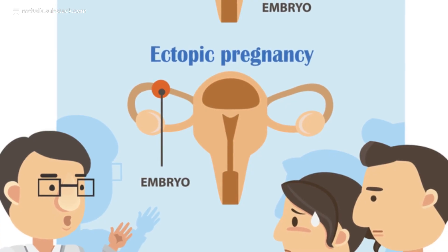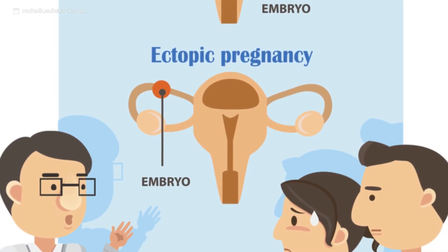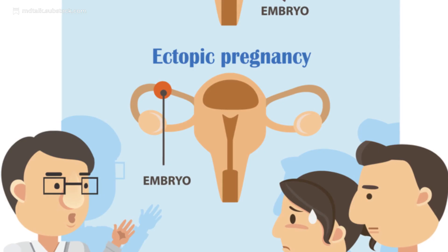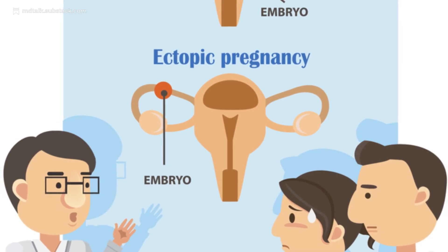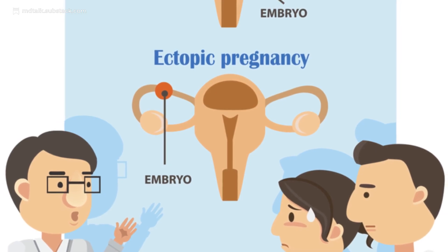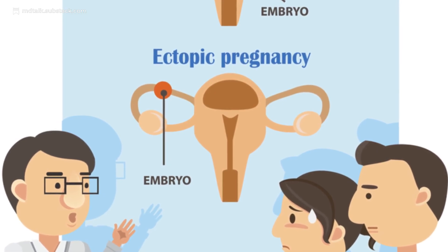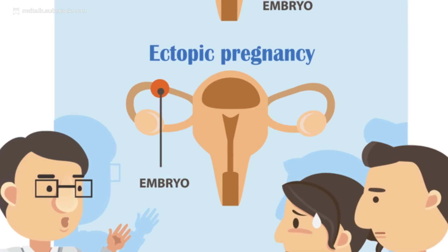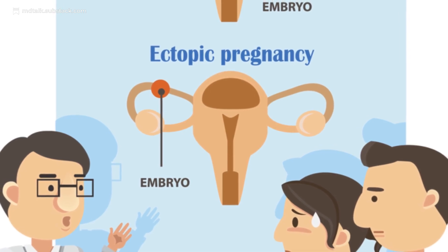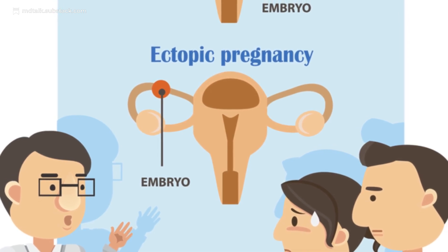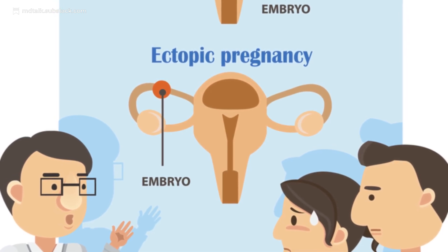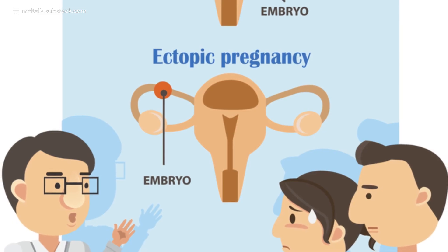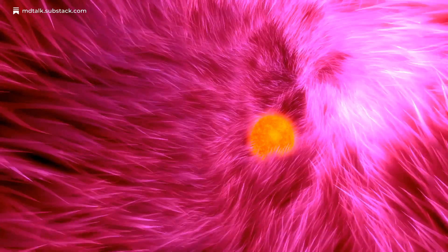Ectopic pregnancy, on the other hand, occurs when implantation takes place outside the uterus, most often in the fallopian tube. This condition poses a serious threat due to risk of rupture and hemorrhage, making early detection crucial.